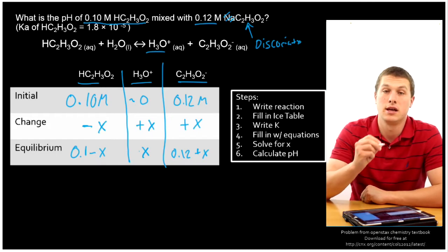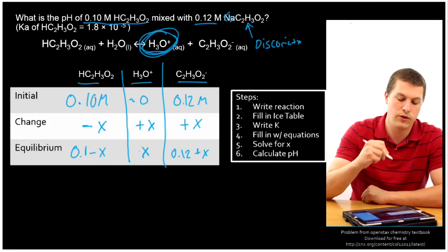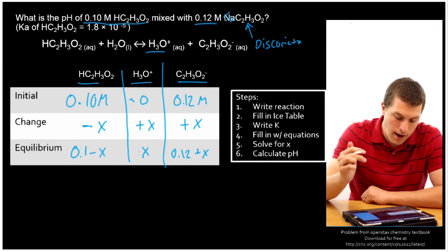Why are we doing all this? Well, our whole goal is to get the pH. And if we want the pH, we need to know the concentration of our hydronium ions. So as soon as we find X, we have the concentration of hydronium ions, and we can solve for the pH.